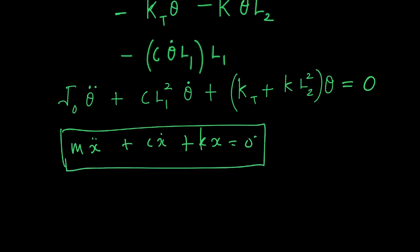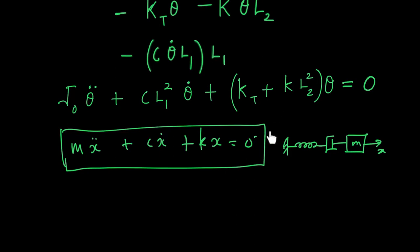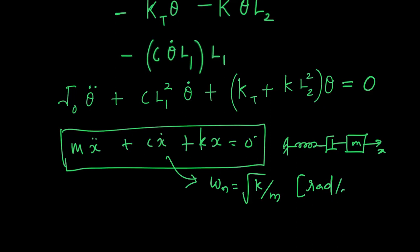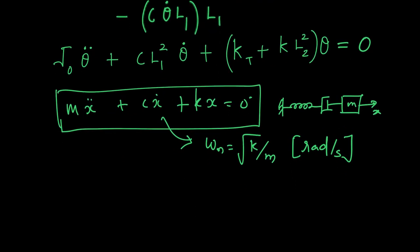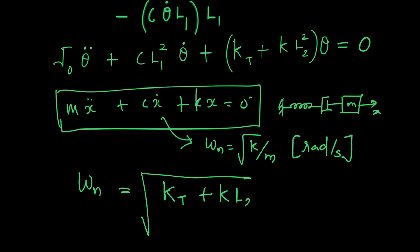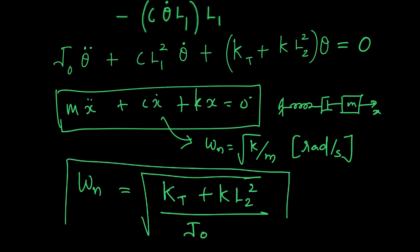For linear translation, natural frequency is ωn = √(k/m). Extending this concept to the rotational equation, the natural frequency of this system is ωn = √[(kt + k·L2²) / J0], where kt is the torsional stiffness, k is the spring stiffness, L2 is the distance to the spring, and J0 is the mass moment of inertia about the pivot.